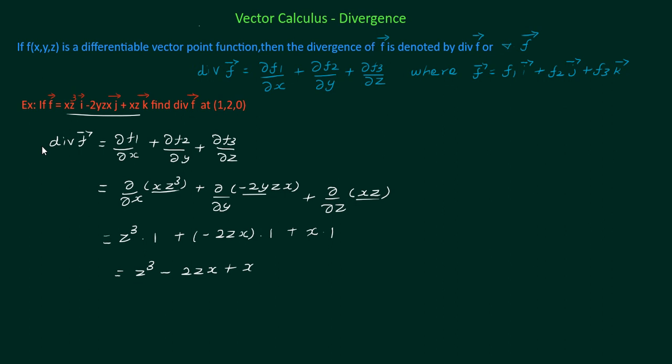We have to find divergence of a vector at the point (1, 2, 0). So substitute the value: 0³ is 0, minus 2 times z is 0. So the value is 0 plus x is 1.